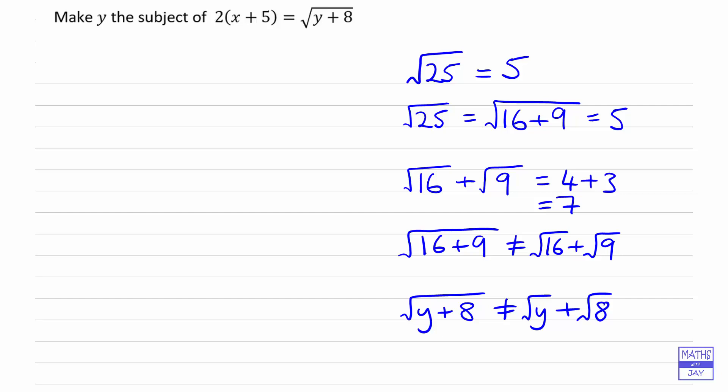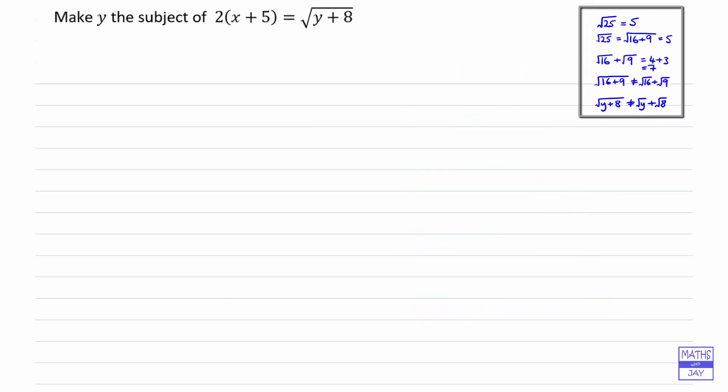Okay, so we know we can't do that, so now let's have a look at what we can do. I think it would be a good idea to swap the sides because we want the y on the left hand side as we want to make it the subject. So let's just write down the square root of y plus 8 is equal to 2 times x plus 5. If two things are equal, it doesn't matter which way round we write them.